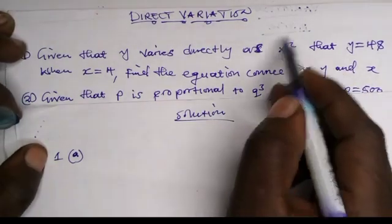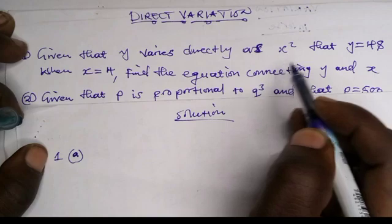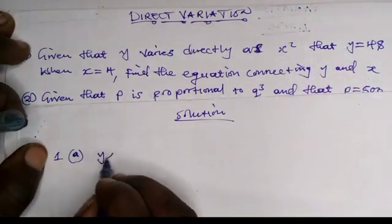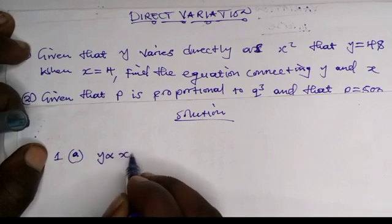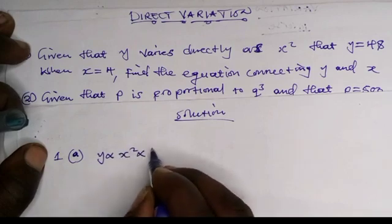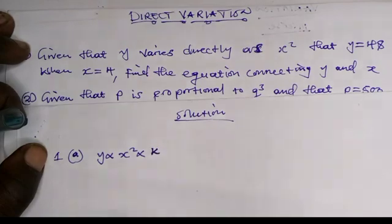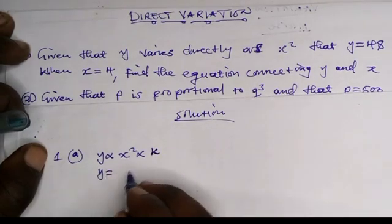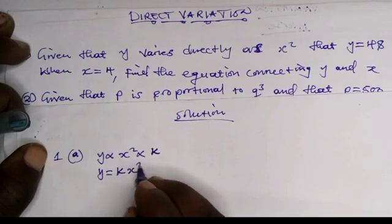We are told that y varies directly as x squared, so it would be y equals k times x squared, where k is a constant.